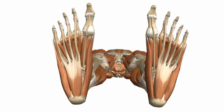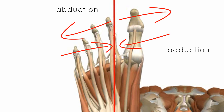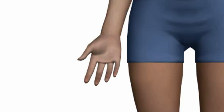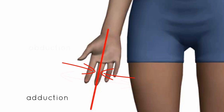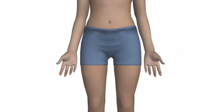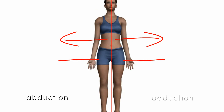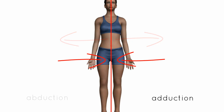A quick note about abduction and adduction in the foot: they are defined relative to a longitudinal axis running through the second digit. Abduction is movement away from this axis, and adduction is movement towards it. This is the same as in the hand, where the midline runs through the middle digit. This differs from the rest of the body, where abduction and adduction are defined relative to the central midline of the body.